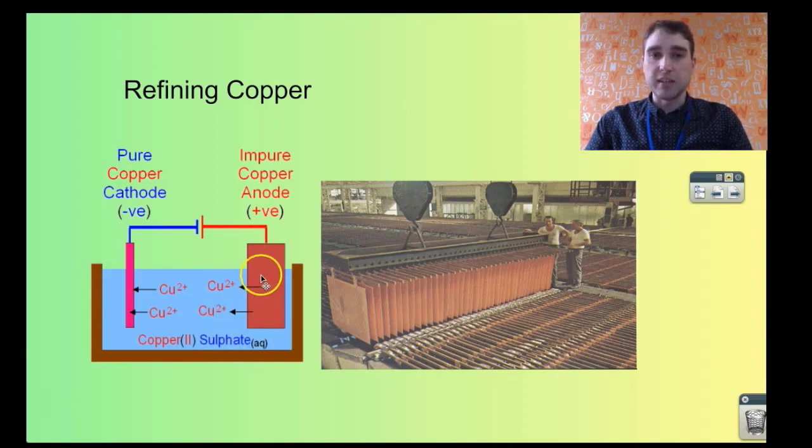When that happens, any less reactive metals like silver and gold form a little pile underneath here. That's called anode mud and that can be quite valuable to recover.